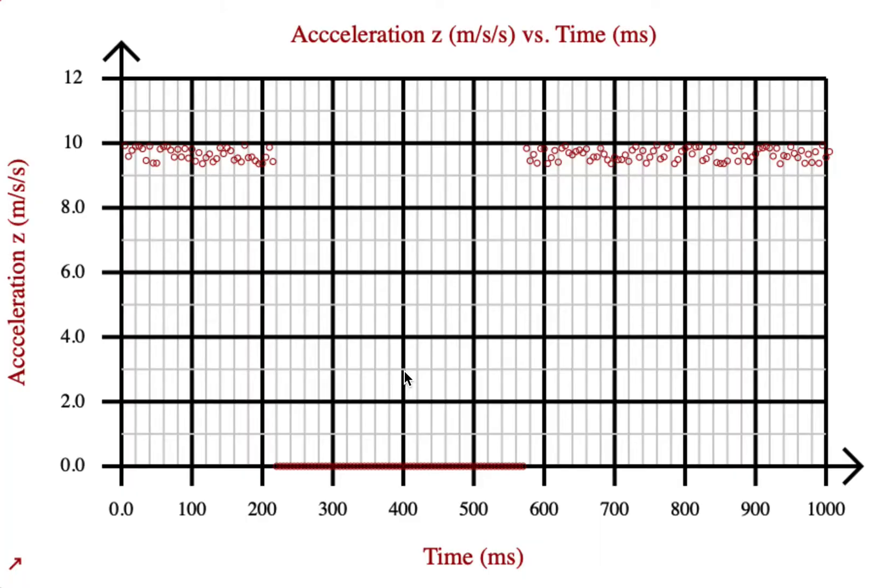Once you have your data collected you can make it bigger. You can look at the first moment it hit 0 and that will be when you first let go of the bucket and that's at 220 milliseconds. It seemed to hit the ground somewhere around 575 milliseconds. So if you subtract those two numbers you'll get the time of fall.